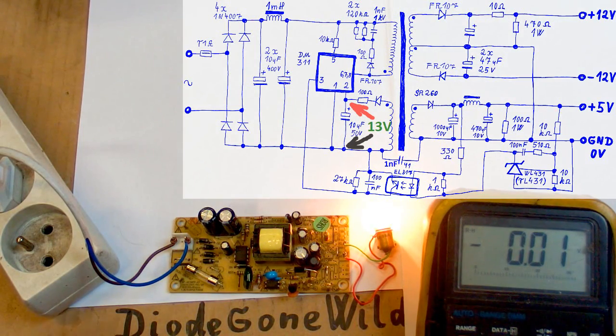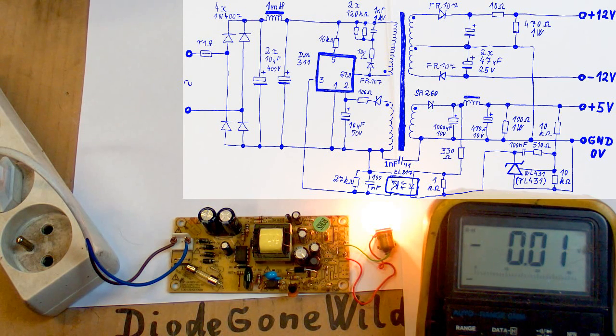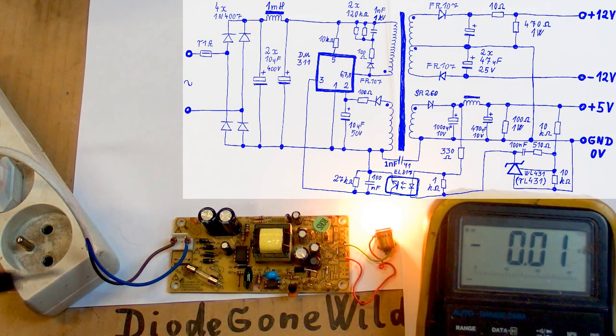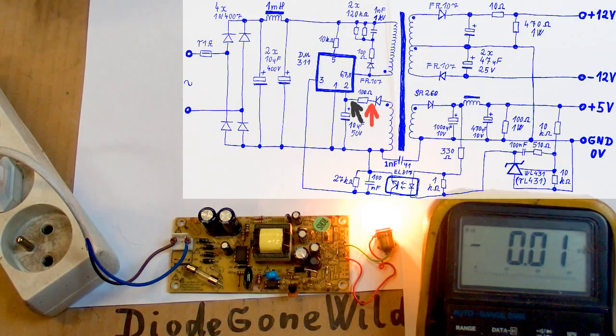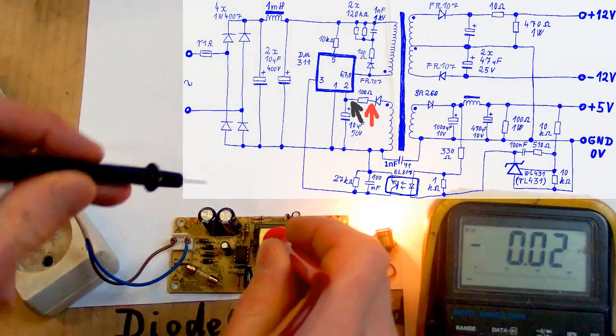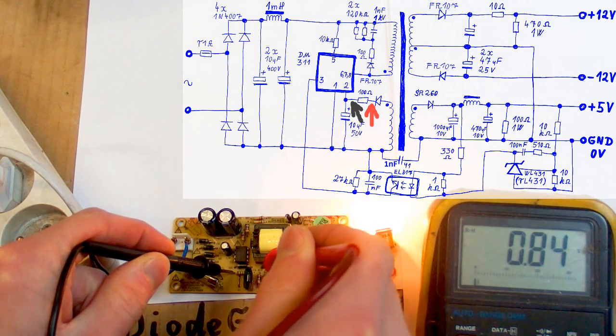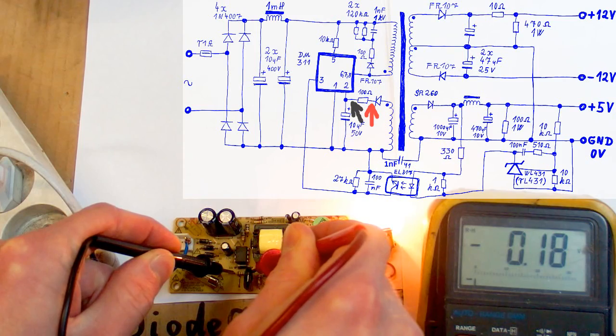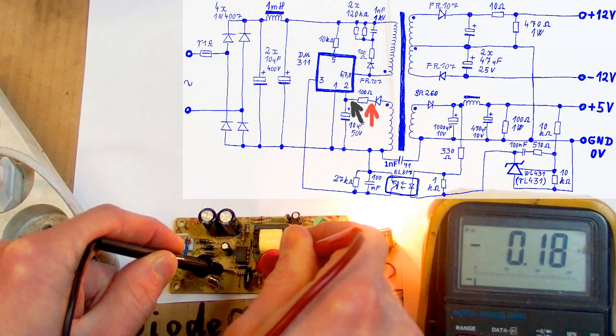So this is the voltage of the auxiliary power supply going into the chip. Now let's try to measure how much the chip draws from the auxiliary power supply. I could actually break some connection and put a current meter into it, but there is also a way to measure it without breaking any connection. So let's measure the voltage drop on this 100 ohm resistor. And the voltage drop is 0.18 volts.